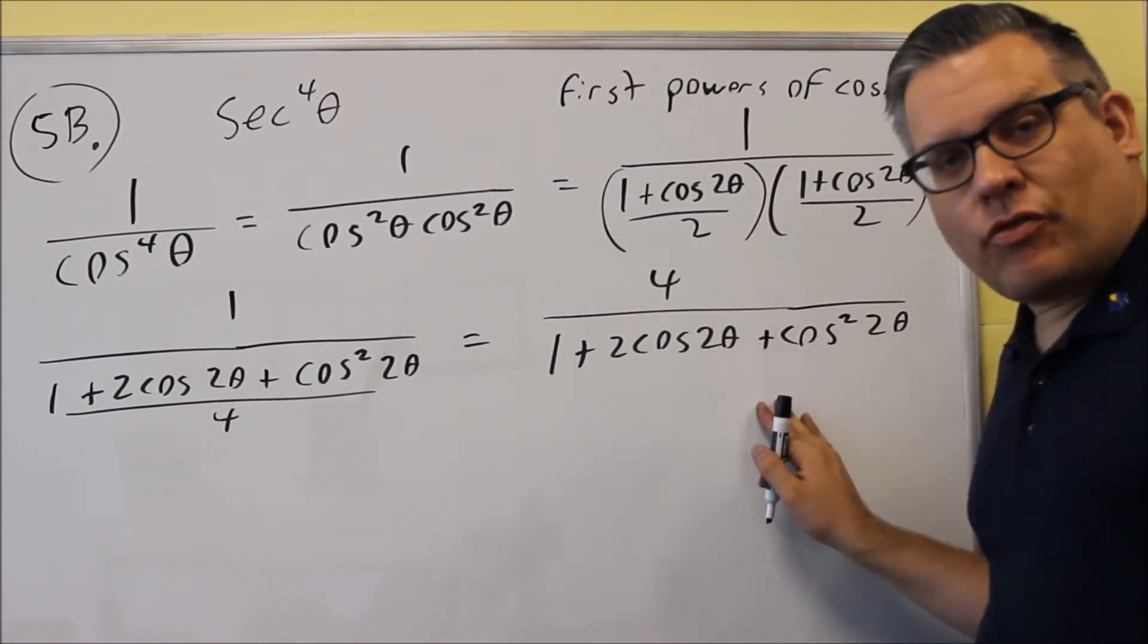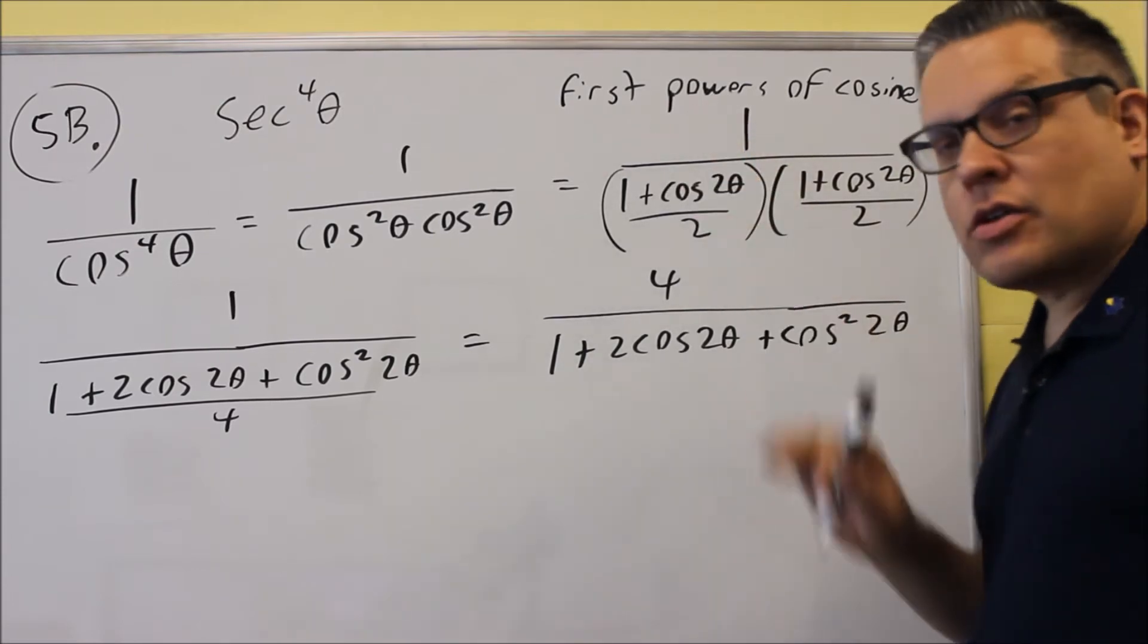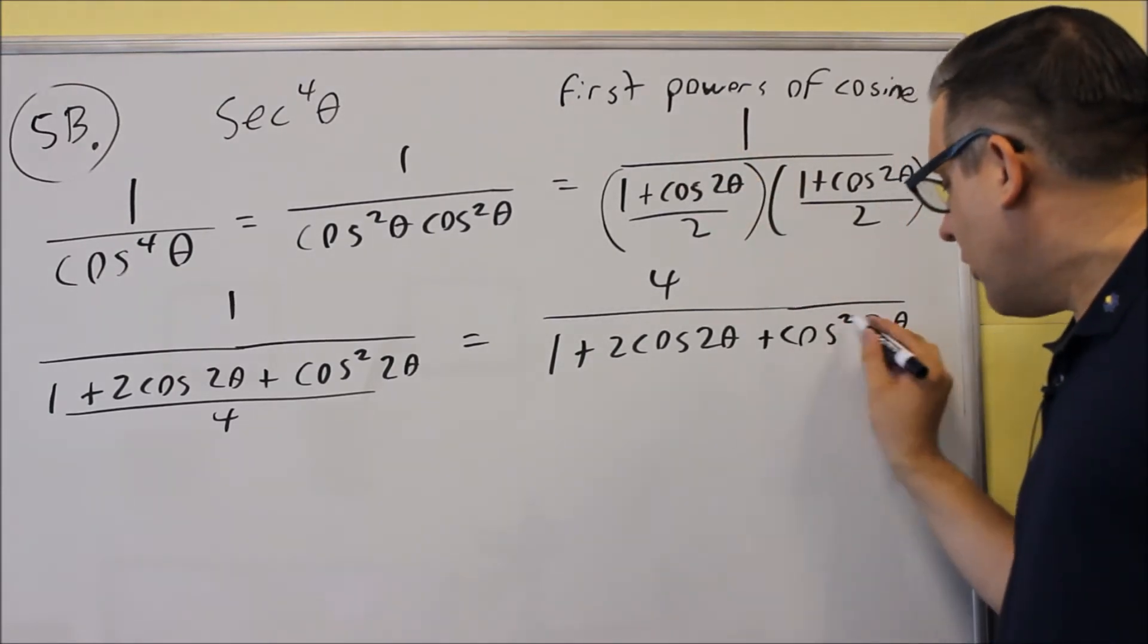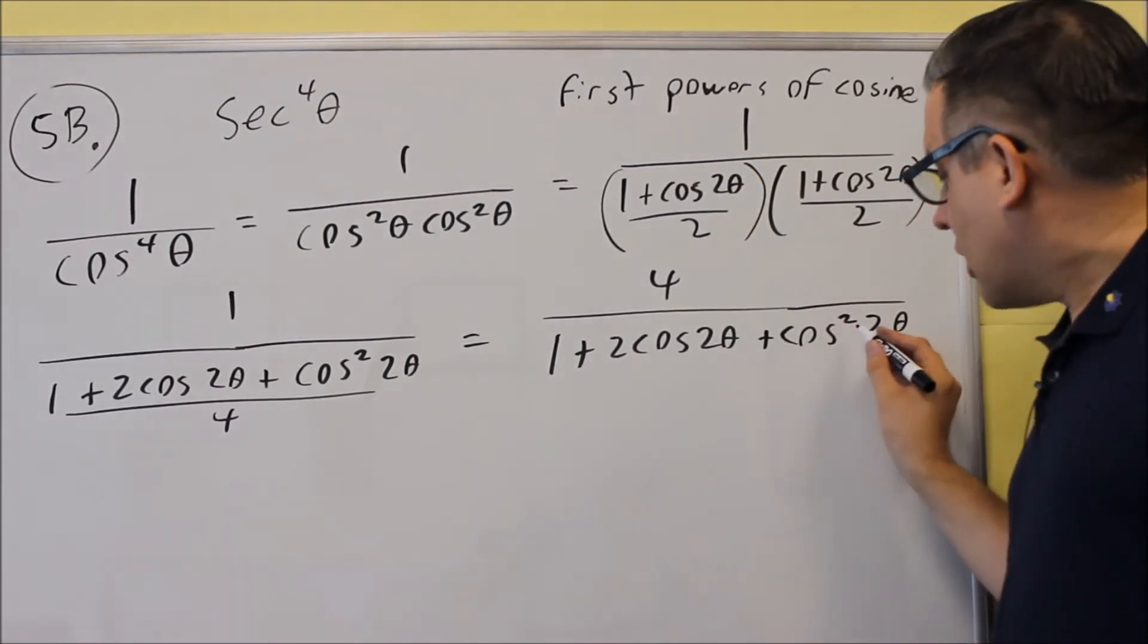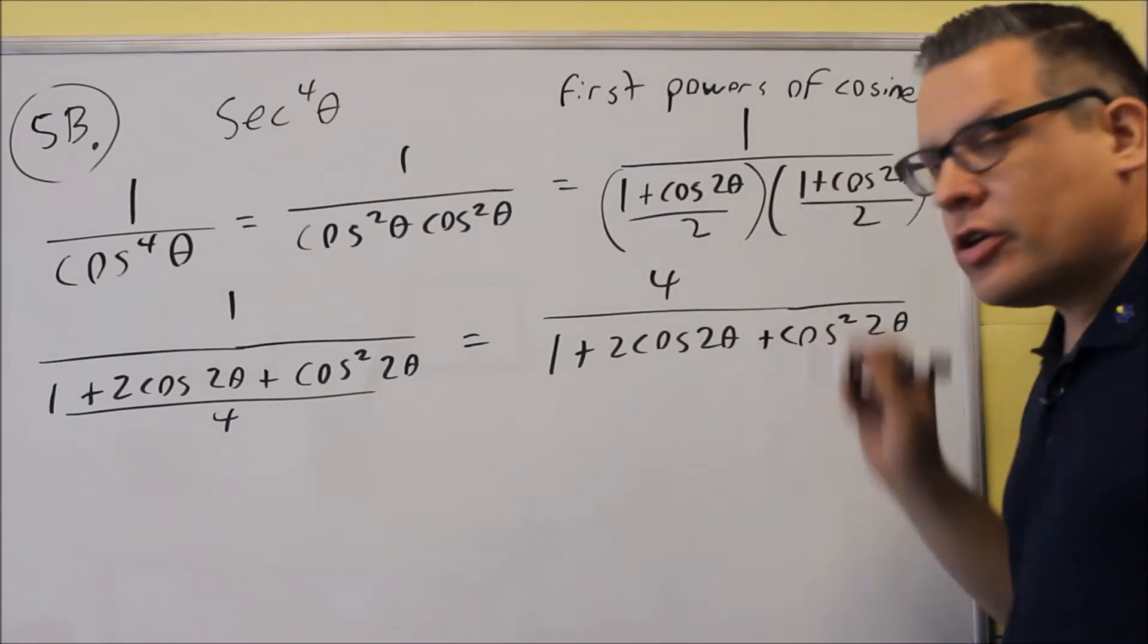Now, we can't leave our answer like this, unfortunately, because we want to write it as first powers of cosine, and we have a square there. And so because of the square, we have to use a power-reducing formula again.